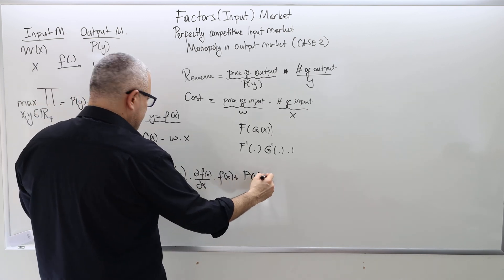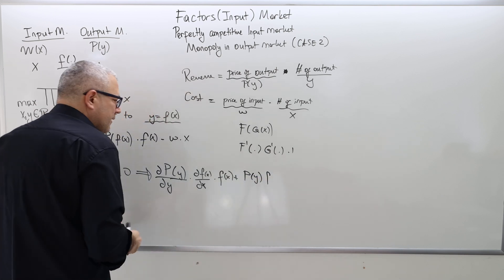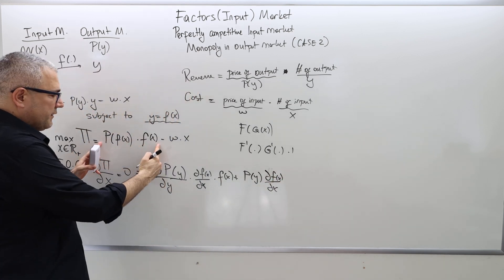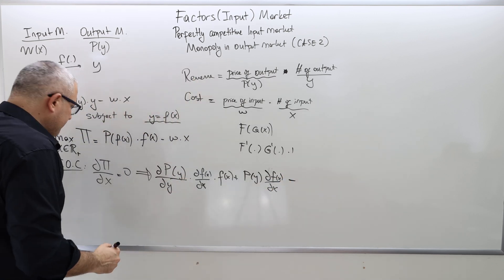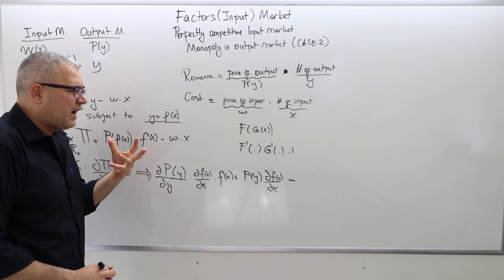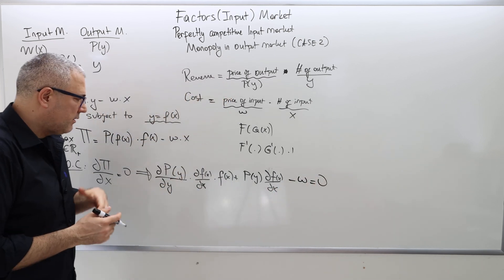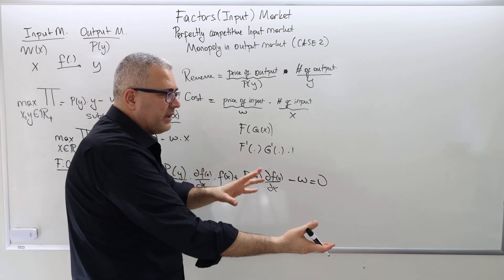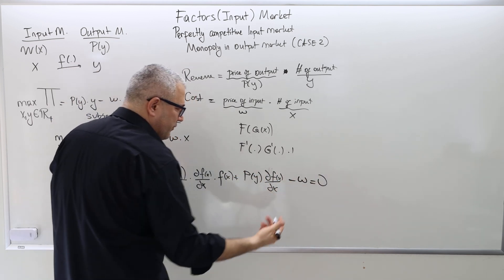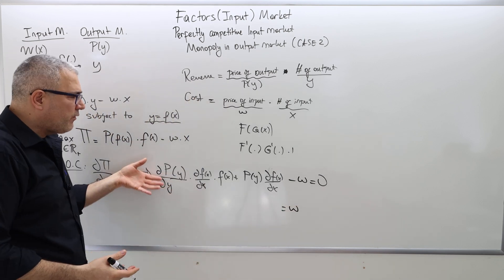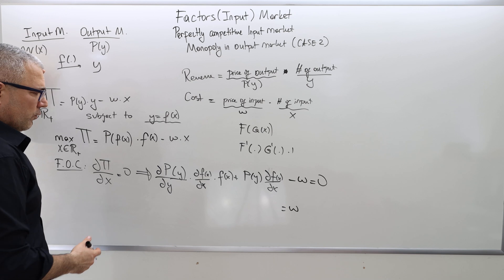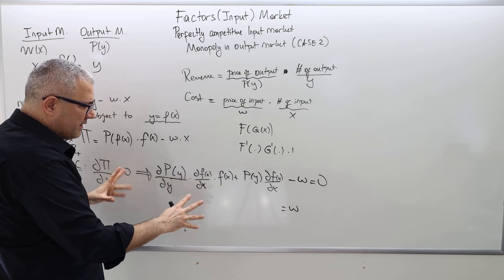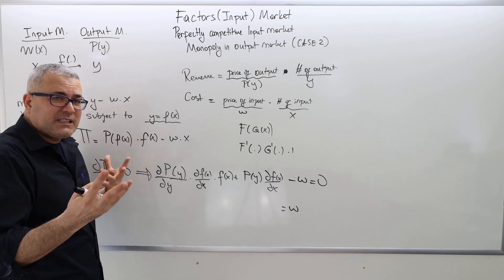The full derivative gives: del p / del y times del f / del x, plus p(y) times del f / del x, minus w equals zero. Solving for x means putting all the relevant terms on one side, sending w to the other side. Since we don't know the functional forms for the demand curve or the labor supply curve, we can't solve explicitly — but we can factor the expression to make things more familiar.